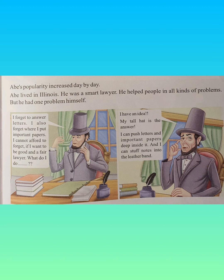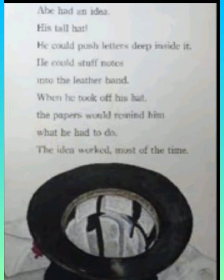Abe lived in Illinois. He was a smart lawyer. He helped people in all kinds of problems. But he had one problem himself. He said: I forget to answer letters. I also forget where I put important papers. I cannot afford to forget if I want to be a good and fair lawyer. What do I do? I have an idea — my tall hat is the answer. I can push letters and important papers deep inside it and I can stuff notes into the leather band.